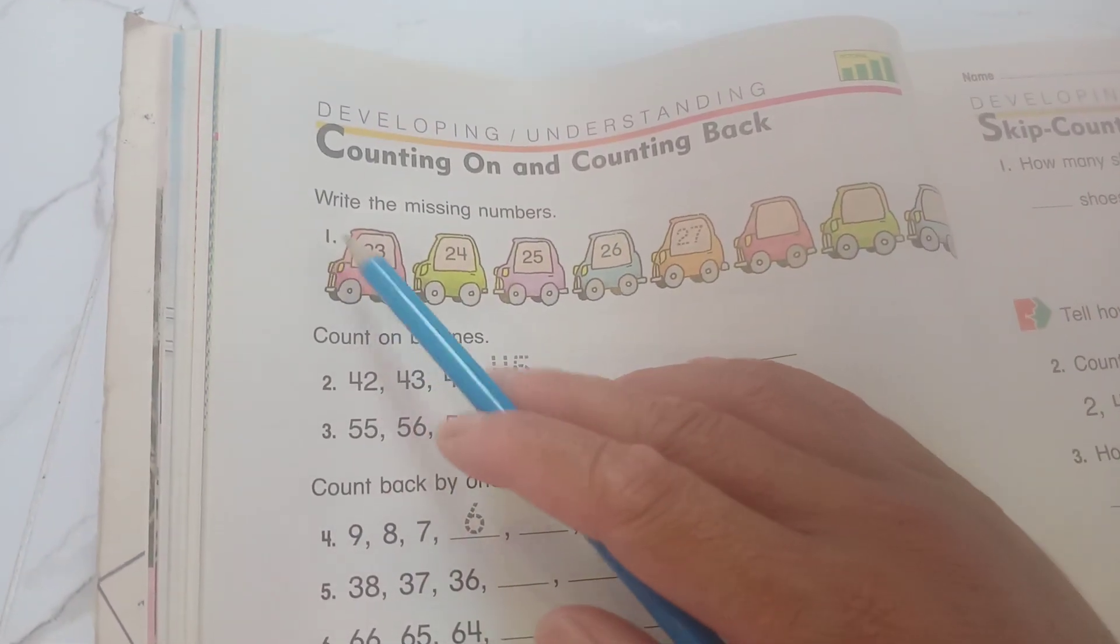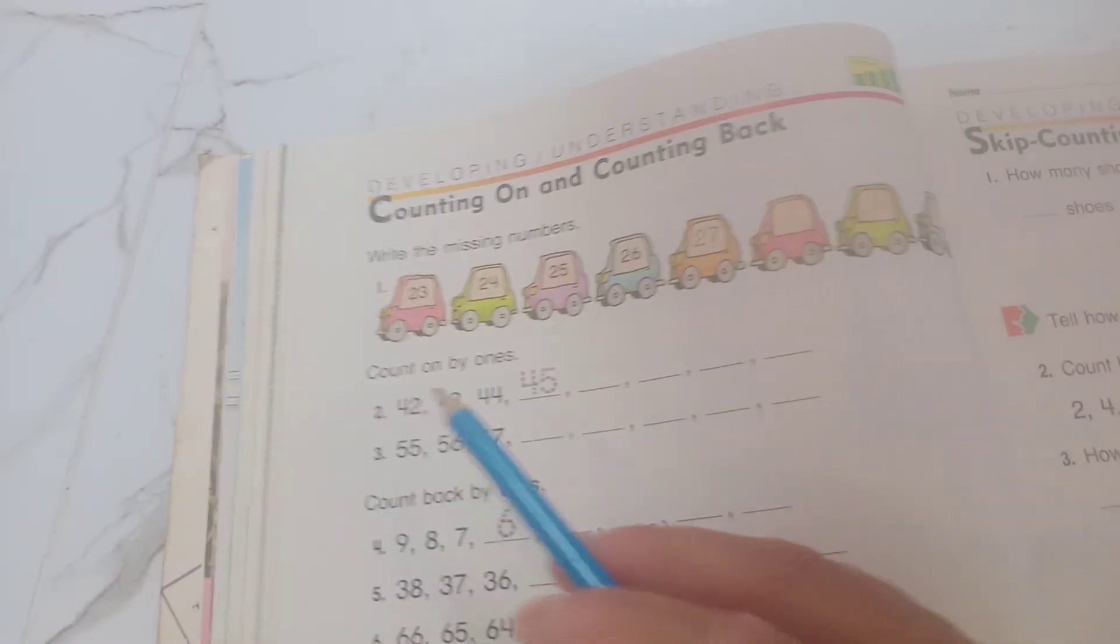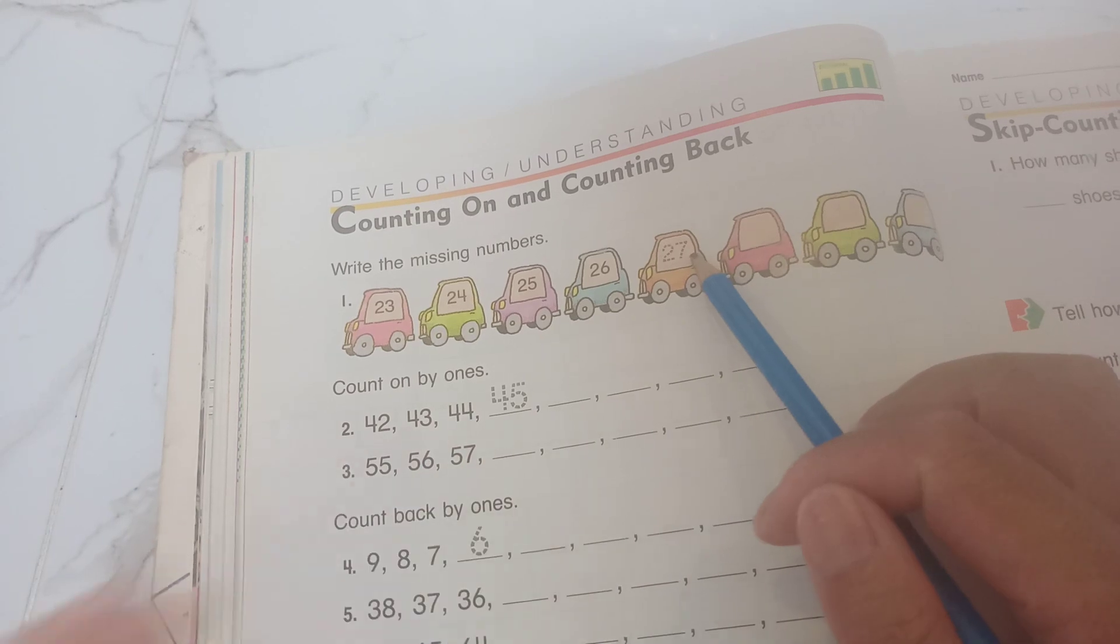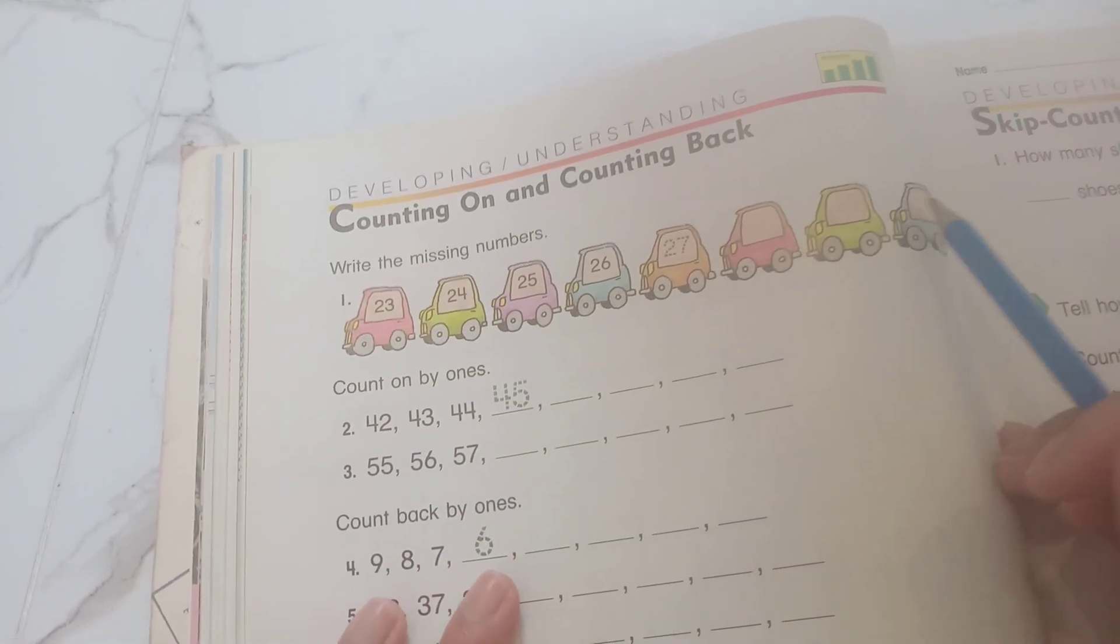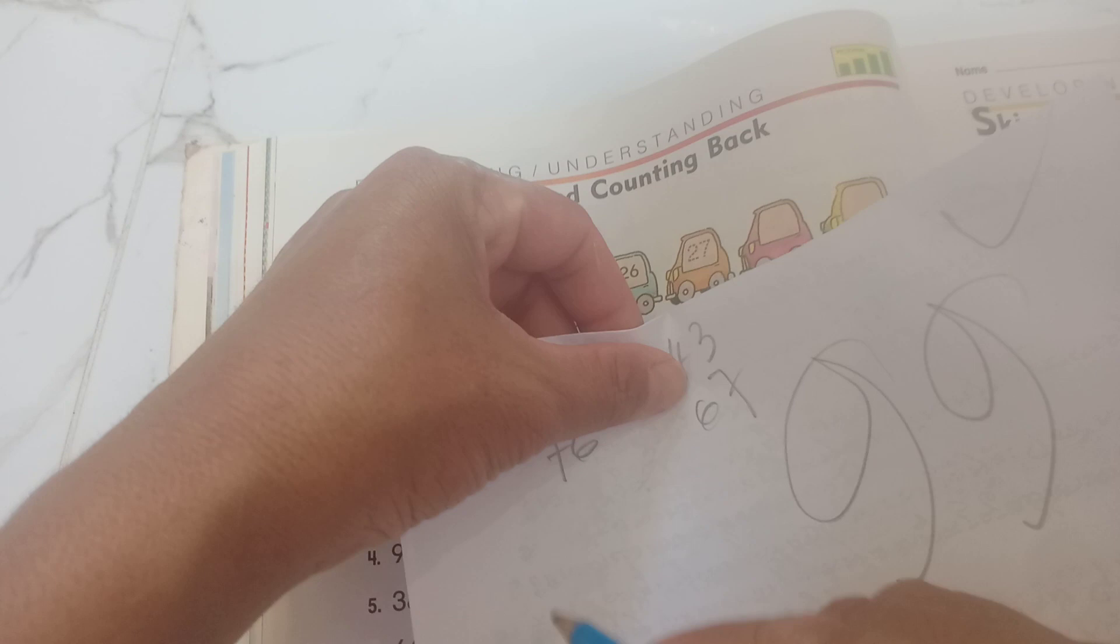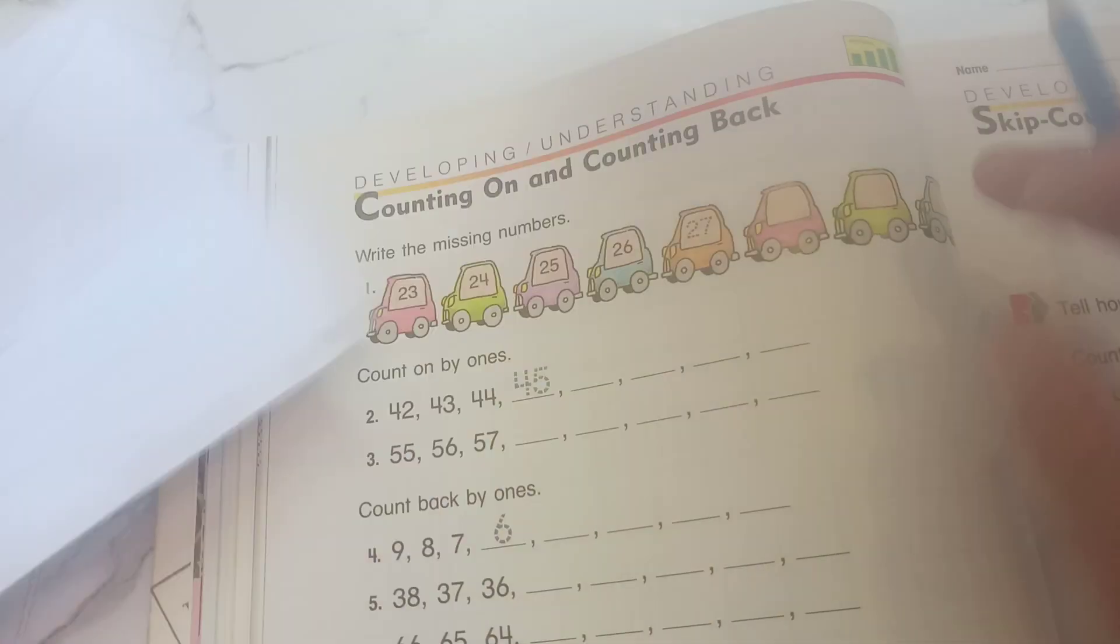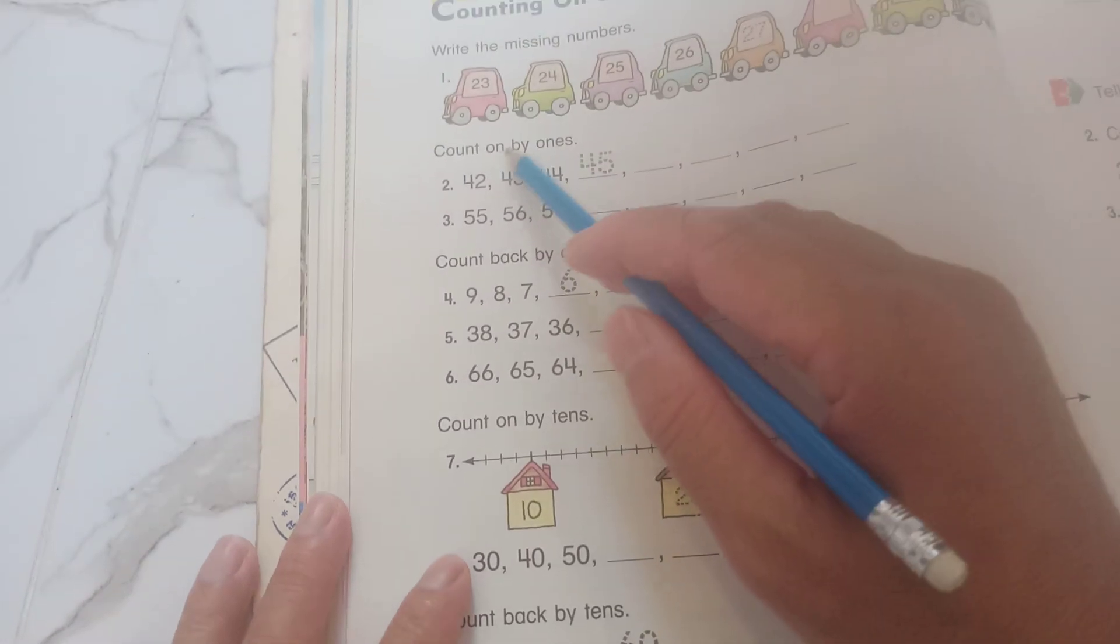Alright, write the missing number. Number 1: you can see, 23, 24, 25, 26, 27, 28, 29, 30. The final one is 30.